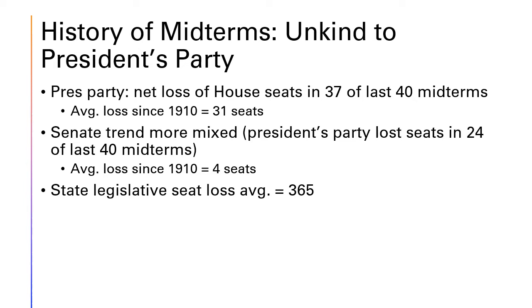Each of our last four presidents has seen his party lose the majority in the House during a midterm election. President Trump in 2018, when Democrats gained control of the House with a 40-seat gain. President Obama in 2010, when Republicans won the majority with a 63-seat landslide. In 2006 under President Bush, when Democrats picked up 30 seats. And in 1994 under President Clinton, when Republicans gained 55 seats to give them a majority in the House for the first time in 40 years.